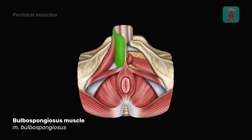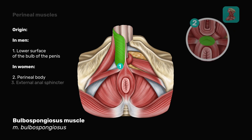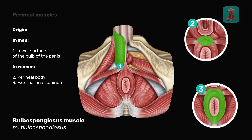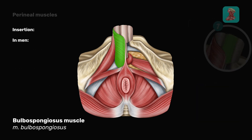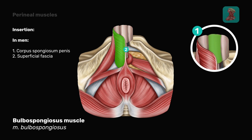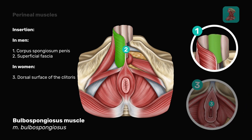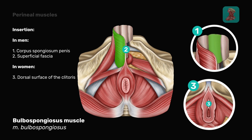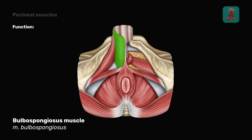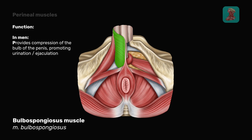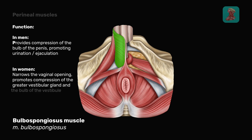The bulbospongiosis muscle: in men, it originates from the lower surface of the bulb of the penis; in women, from the perineal body and the external anal sphincter. In men, it inserts into the corpus spongiosum of the penis and the superficial fascia; in women, it inserts into the dorsal surface of the clitoris. In men, it provides compression of the bulb of the penis, promoting urination and ejaculation. In women, it narrows the vaginal opening and promotes compression of the greater vestibular gland and the bulb of the vestibule.